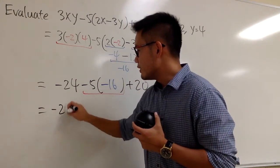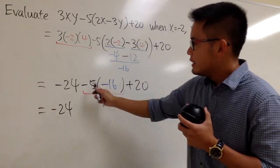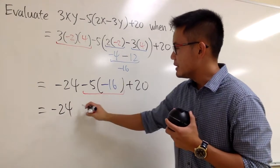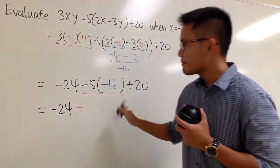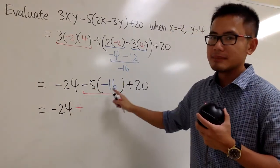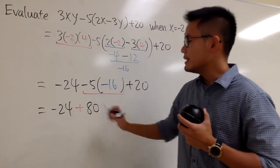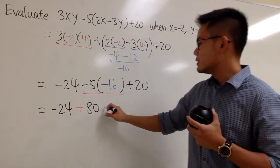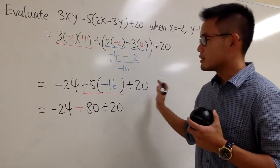So here we have negative 24 stays the same. This is negative times negative becomes positive. And 5 times 16 is 80. And we can just continue by putting down the plus 20.